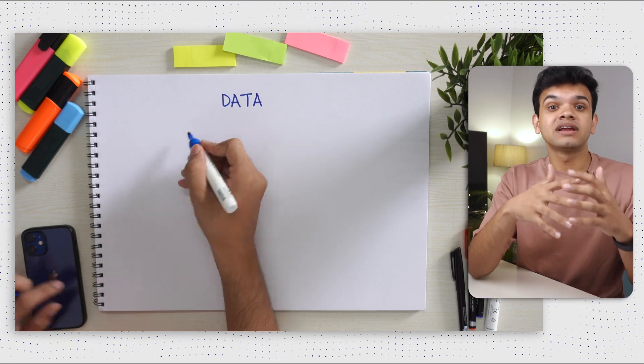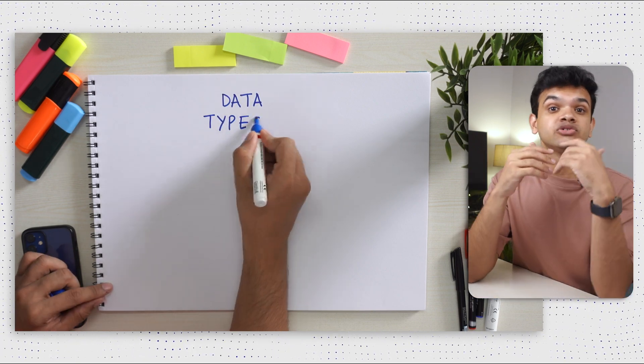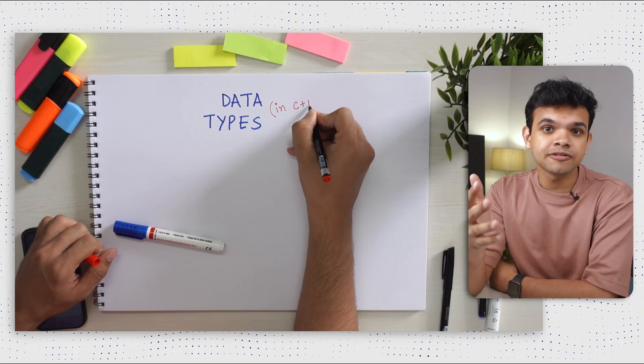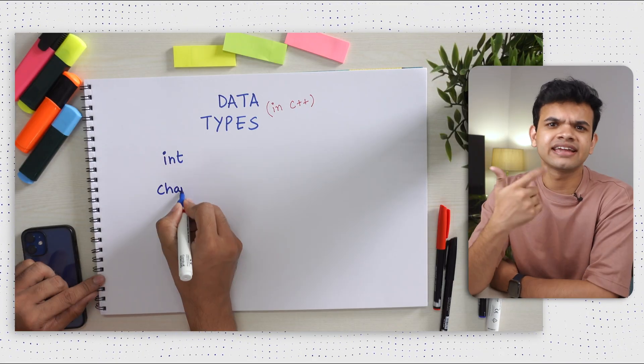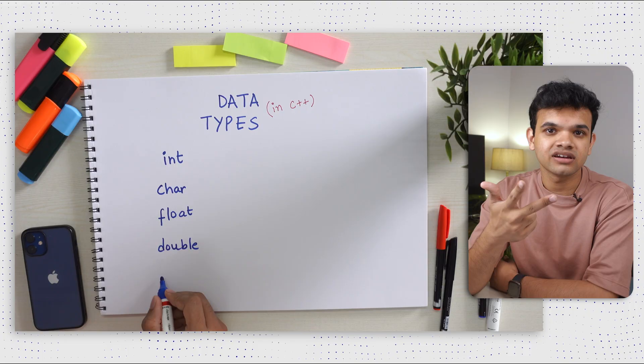Before we start with data structures, you need to know about data types. With every programming language, we need to store some data, and every programming language gives us some basic data types to do that. For example, in C++ we have int, char, boolean, float, and double. We can store these types of data and then perform calculations and operations over them.